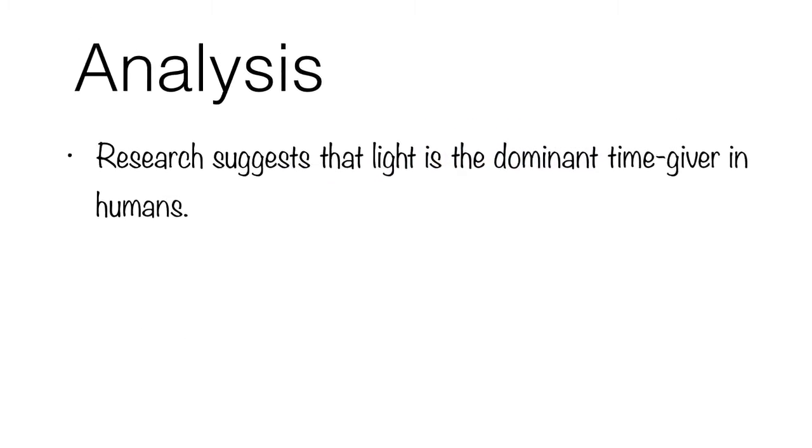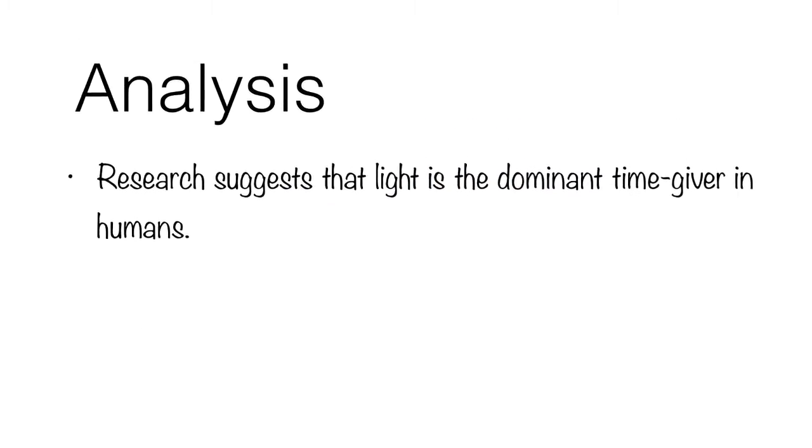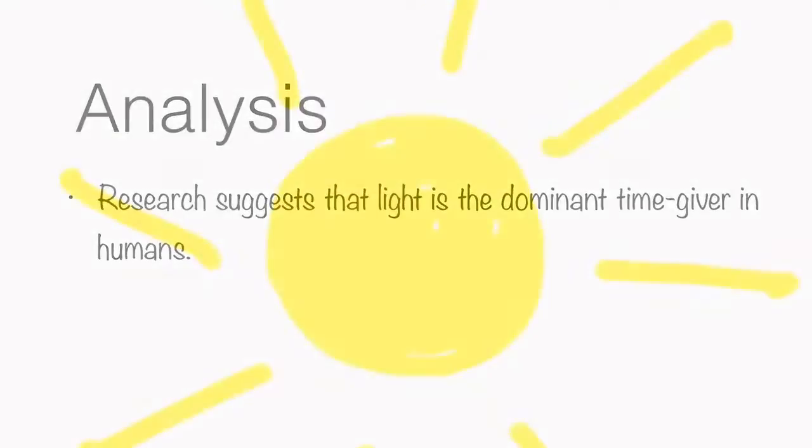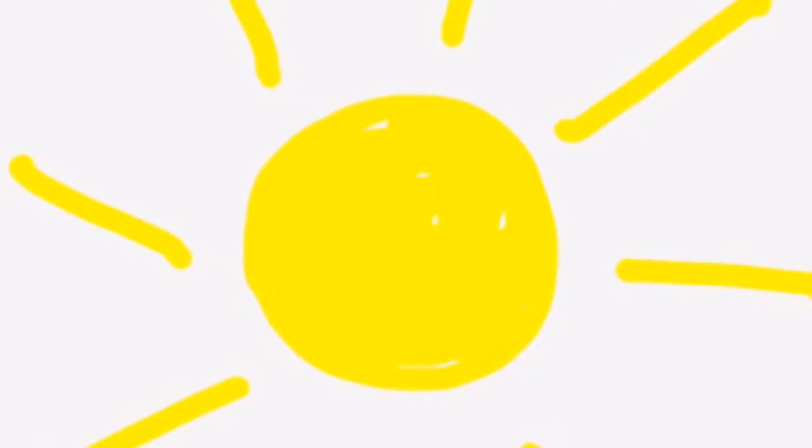Research suggests that light may be the dominant time giver for humans. Miles, for example, reported the case of a blind man who had a slightly longer than 24 hour rhythm and was therefore constantly out of sync with the external world. Despite alarm clocks and other attempts to entrain his rhythm, he remained a slave to his internal clock without light.